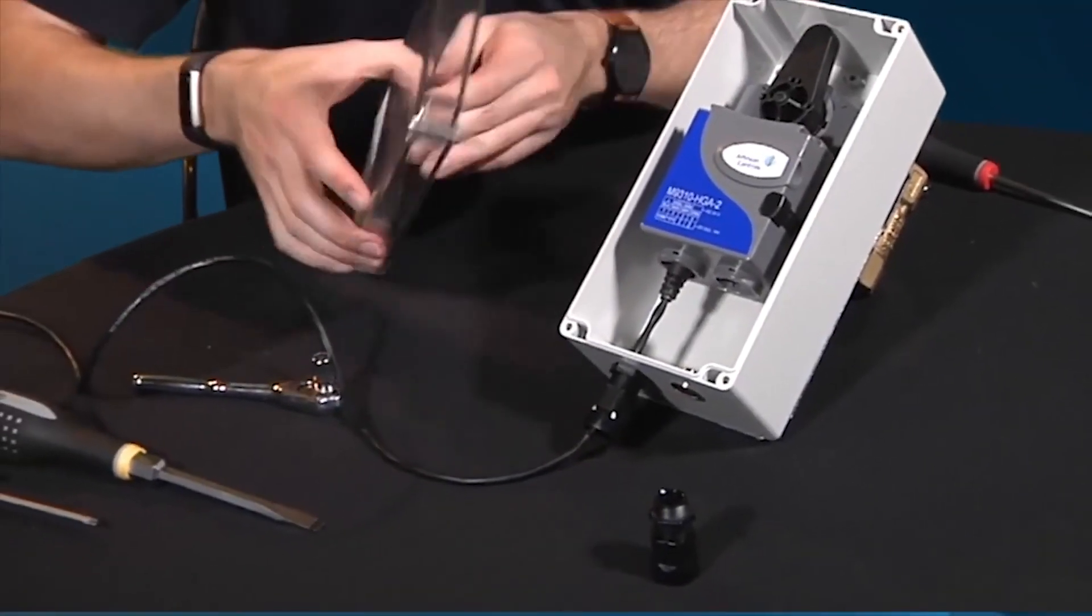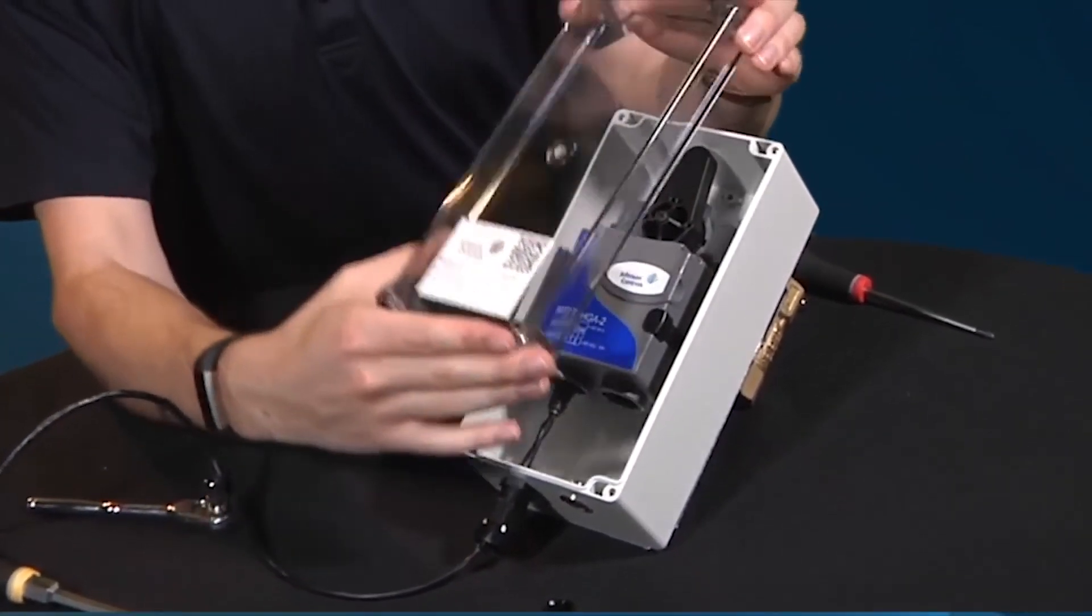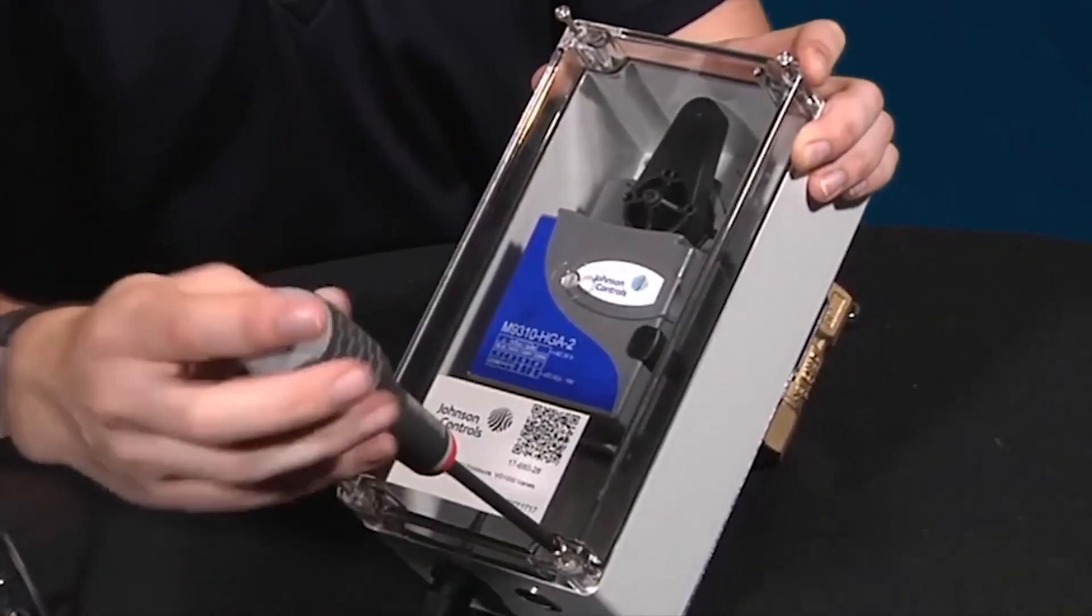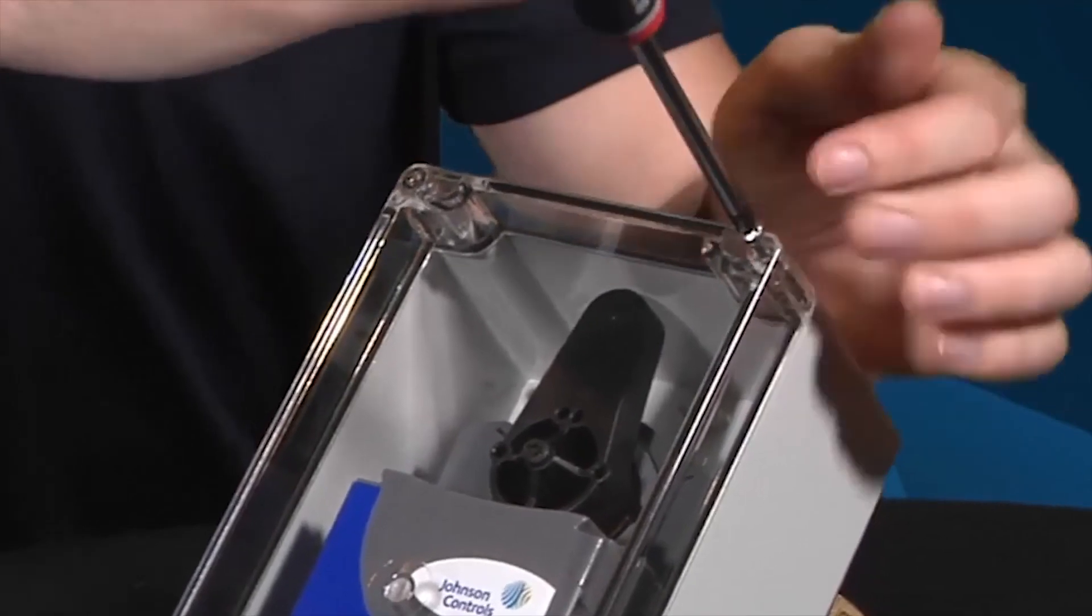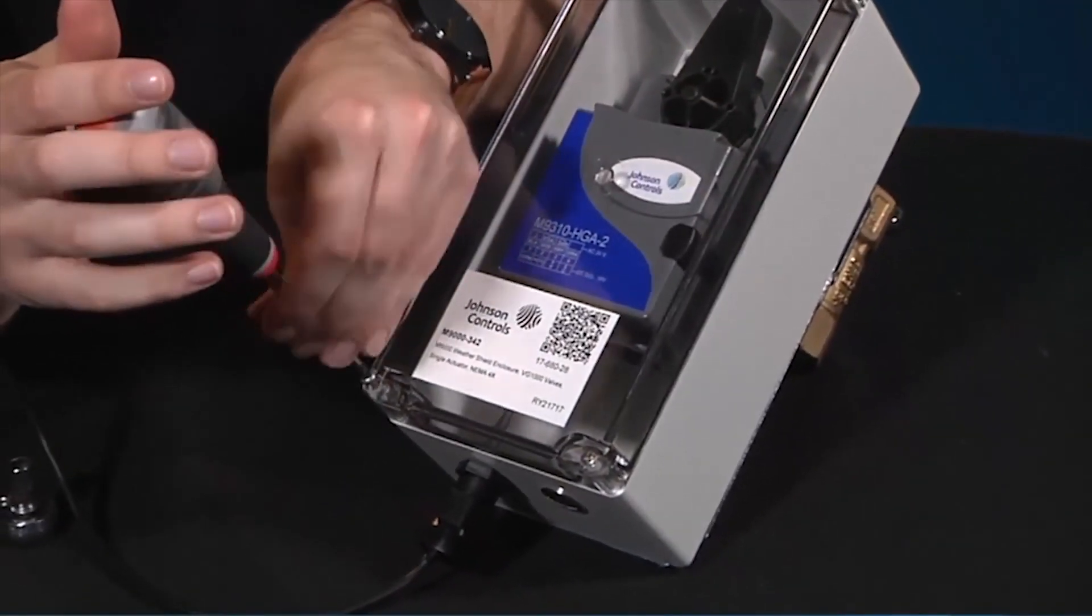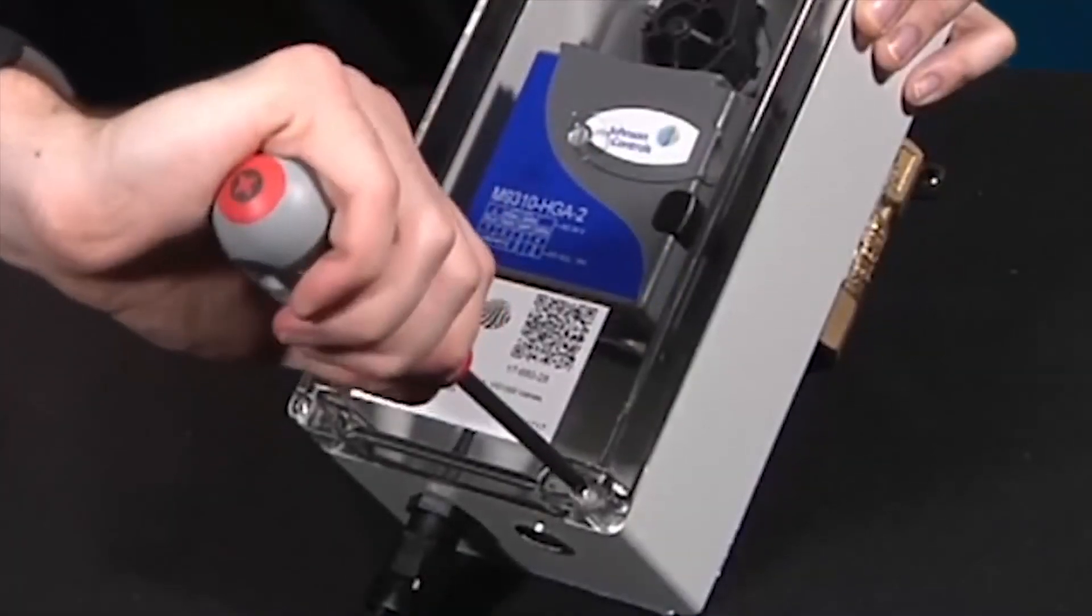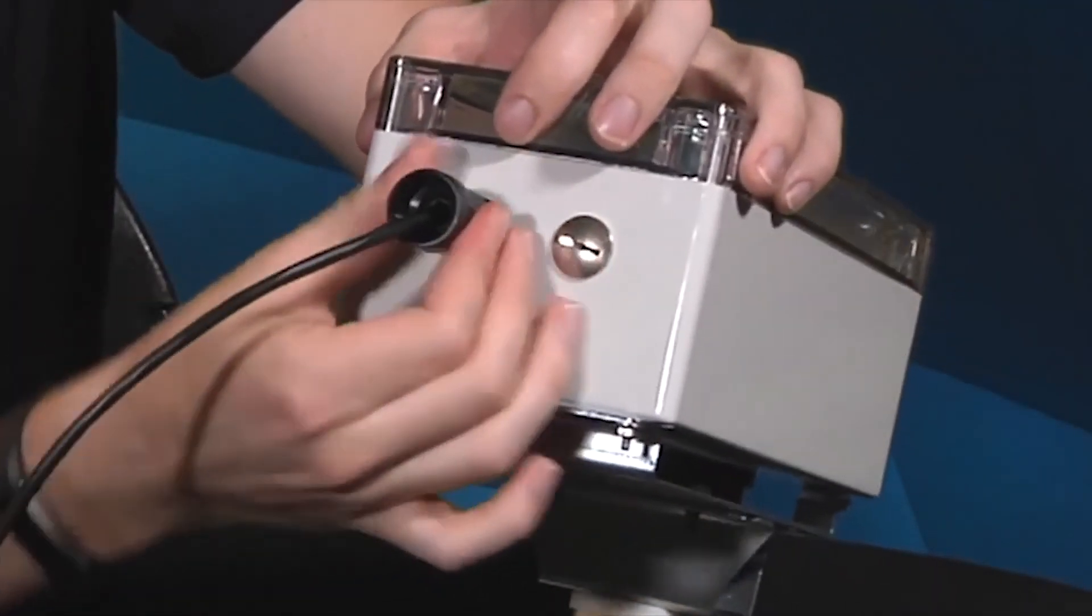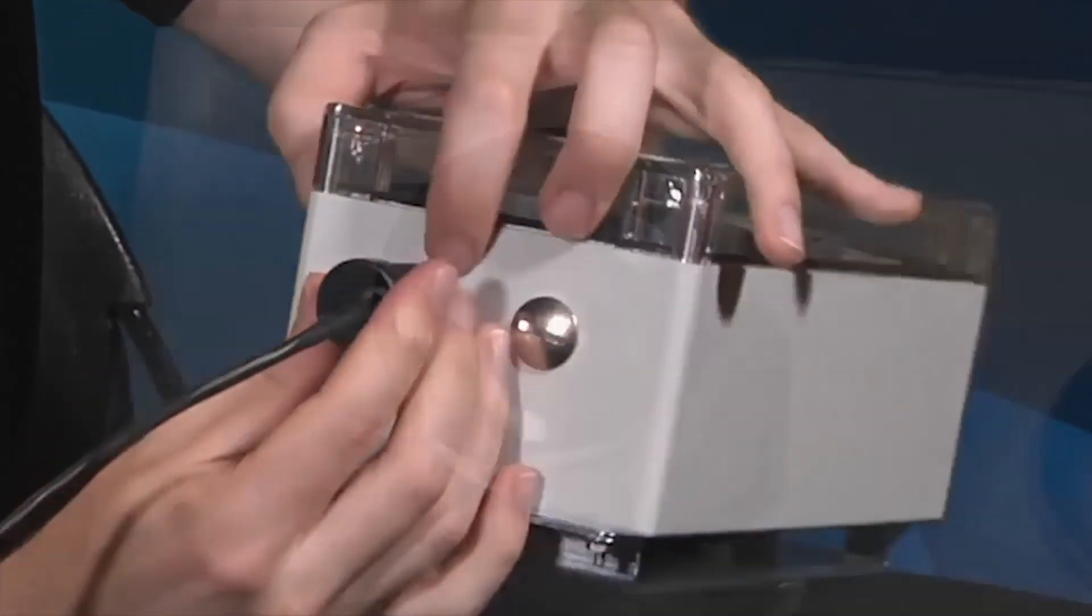Now we will install the cover the same way that it came packaged. Tighten the four corner screws to 9 to 12 inch pounds.